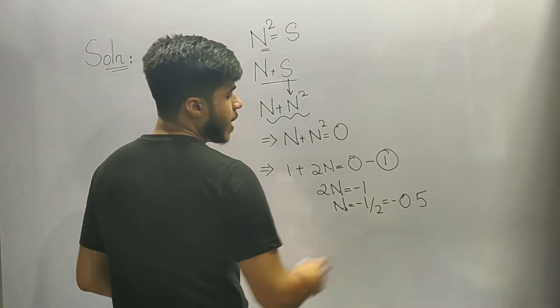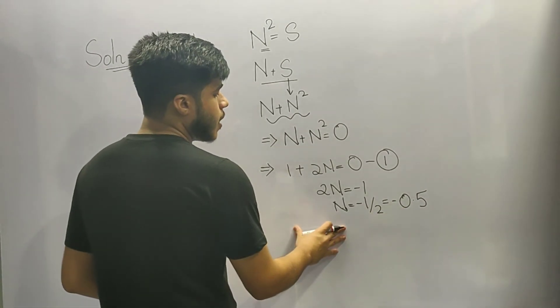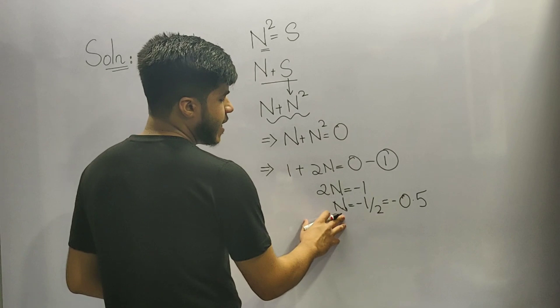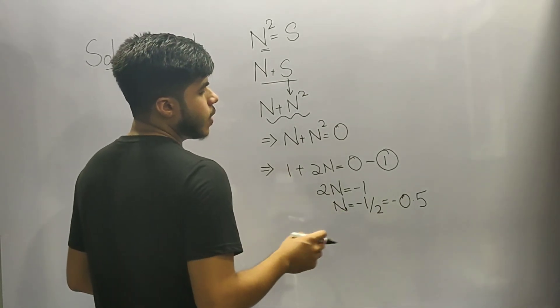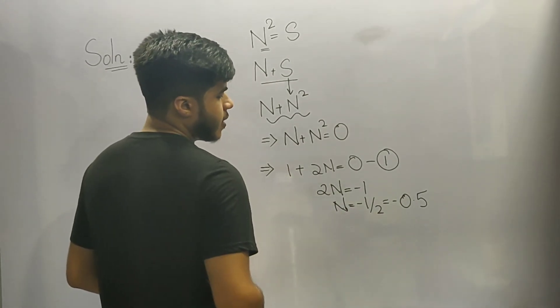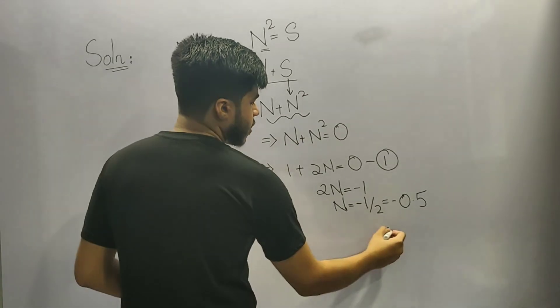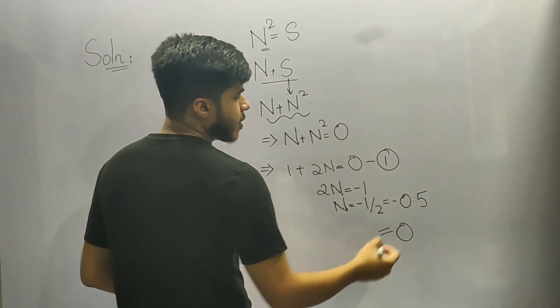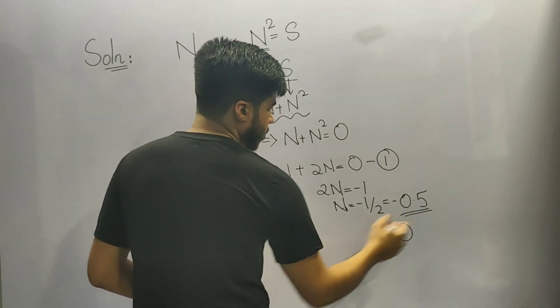Now for confirming that whether this value that we have got is our minima or not, we have to find whether the second derivative is greater than or equal to 0. So upon differentiating this equation once again, we will get the value as 0, so it is confirmed that this is our minima.